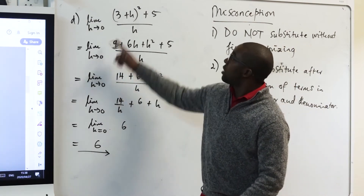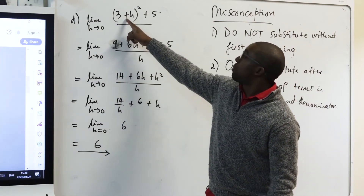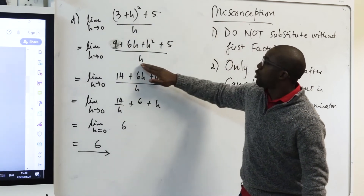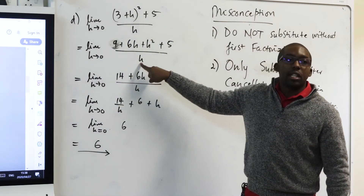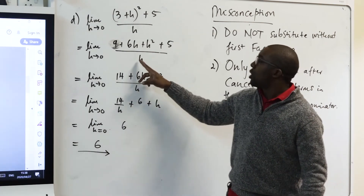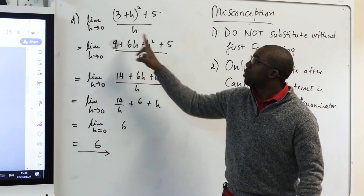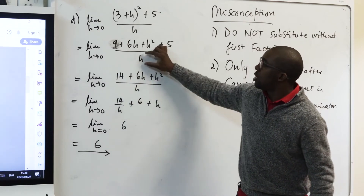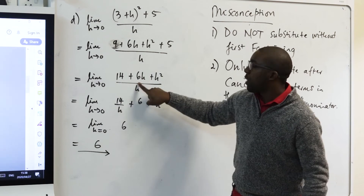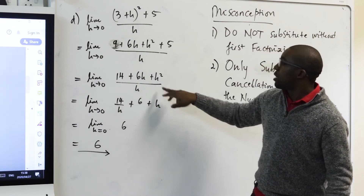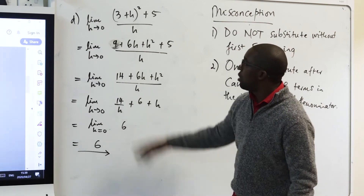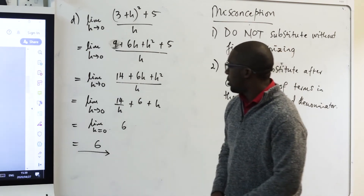What is key is to first use the distributive law, then break it up — since the denominator is a monomial term, it divides into everything in the numerator: h divides into 14, into 6h, and into h squared. Thereafter you substitute h approaching 0 and the answer comes out.